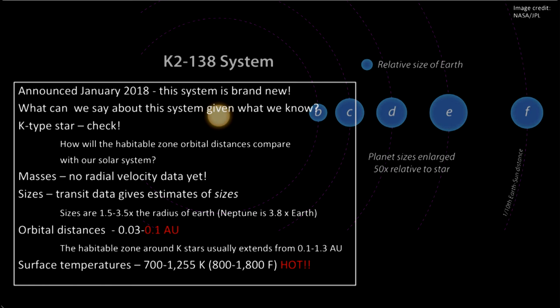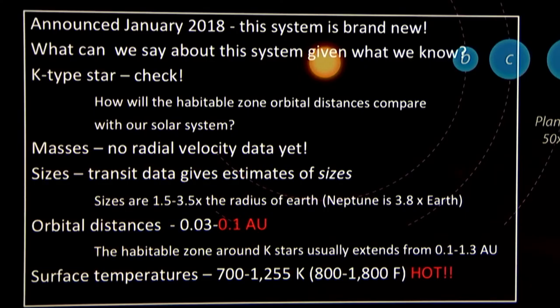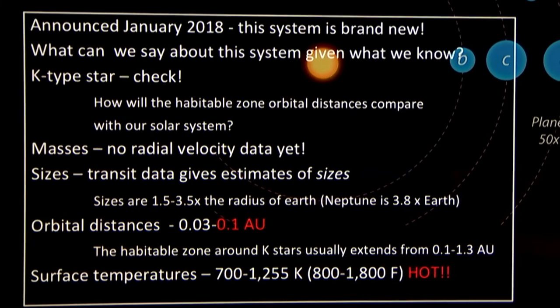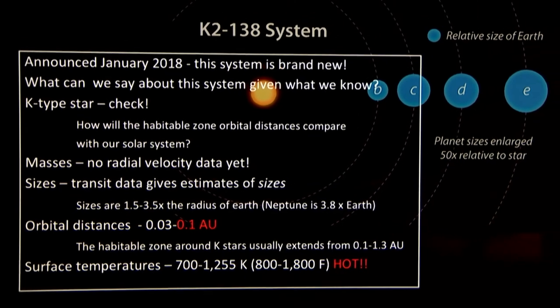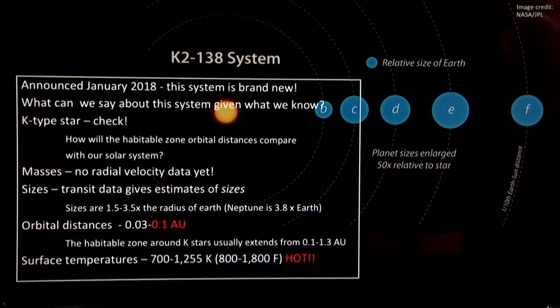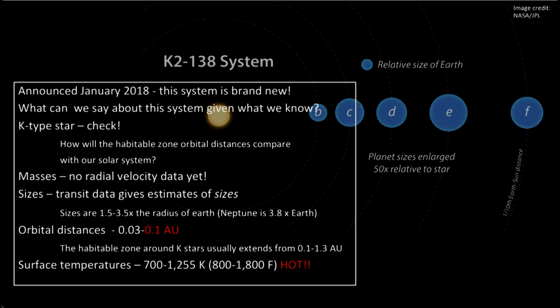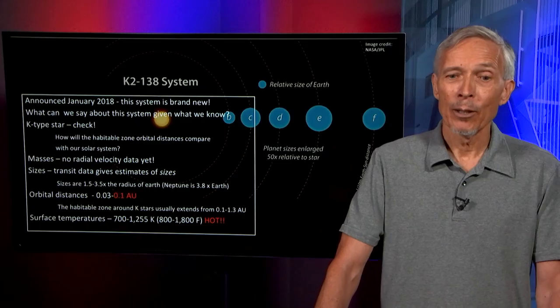By now most of the exoplanet systems have been found by the transit method and it's a lot of work to measure planet masses by the radial velocity technique, which essentially runs out of steam or sensitivity around an earth mass. So, the limiting factor on putting these pieces of information together, the mass and the size to get a mean density, is currently the radial velocity method. Therefore, astronomers are working hard on new instrumentation that can serve a larger number of exoplanets to measure this crucial quantity, the mass.